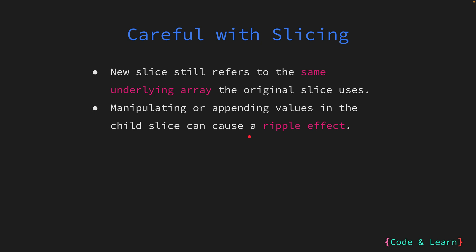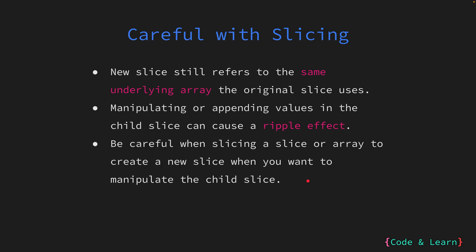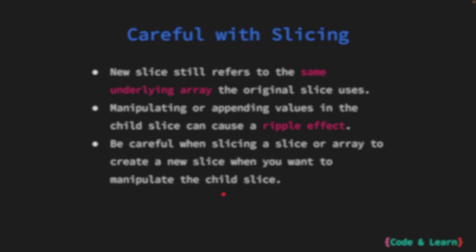Similarly, if you manipulate or append data to the parent slice it will have a ripple effect on the child slice or any slices created from it. So you should be very careful when creating a new slice from an existing slice or an array, because manipulating any of the existing or new slice will change the state of the underlying array. Take special care when working with slices created from slice expressions.